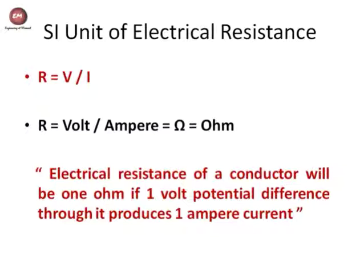Now for defining 1 Ohm: if a conductor has a 1 Volt potential difference across its ends and 1 Ampere of current flows through that conductor, then the resistance of that conductor will be 1 Ohm.